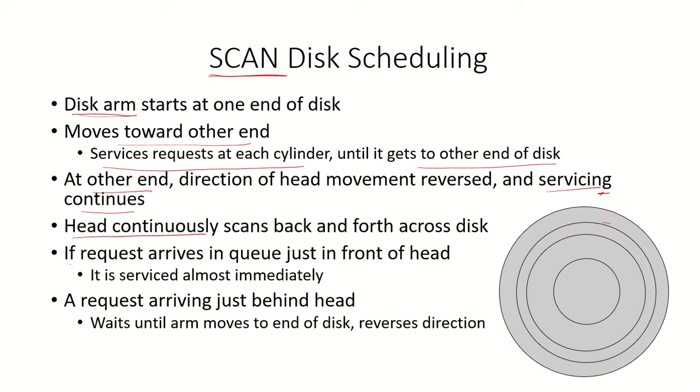If the request arrives in queue just in front of the head - let's say the head is currently over here and a request has come which is just in front of the head, on a track which is closer to the head in the direction of movement - then it is going to be serviced almost immediately.